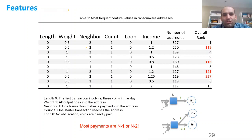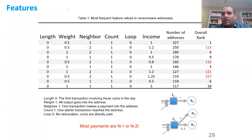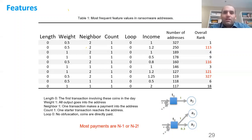Looking at the feature table: length is always 0, because when people are ransomed they don't have Bitcoin available, so they go to an online exchange, buy Bitcoin, and then make a payment — meaning the ransomware payment is the first time that address is used that day. Weight is the amount of Bitcoin, typically 0.5 or 1 Bitcoin. The rightmost column shows the overall rank of each pattern — rank 1 means most Bitcoin transactions use that pattern anyway, so it's not very useful. But the second feature pattern is the 113th most popular in the Bitcoin network, so catching addresses with that pattern gives a better chance of identifying ransomware payments.